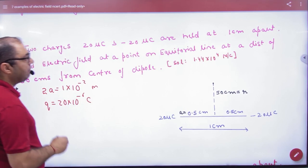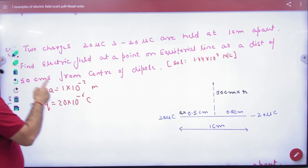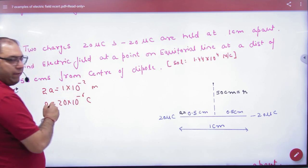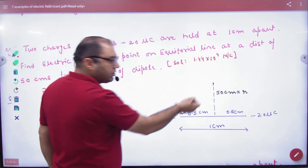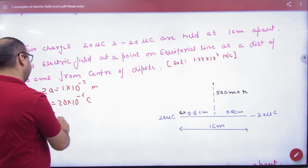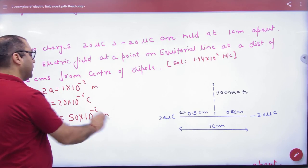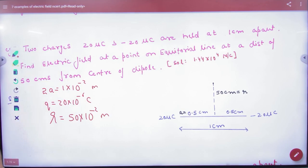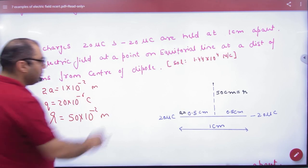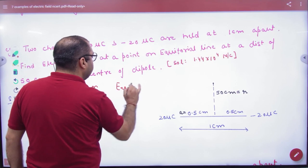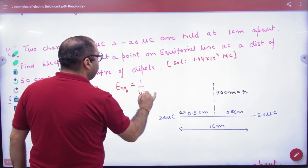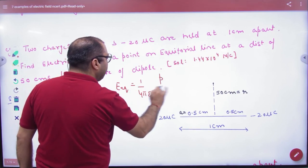What do you want to do? We want to take electric field on the equatorial line. So, equatorial means that it is 50 cm apart from the center. So, R value is also given in question. R is also given. So, you have to take E equatorial formula. 1 by 4 pi epsilon 0, P by R q.